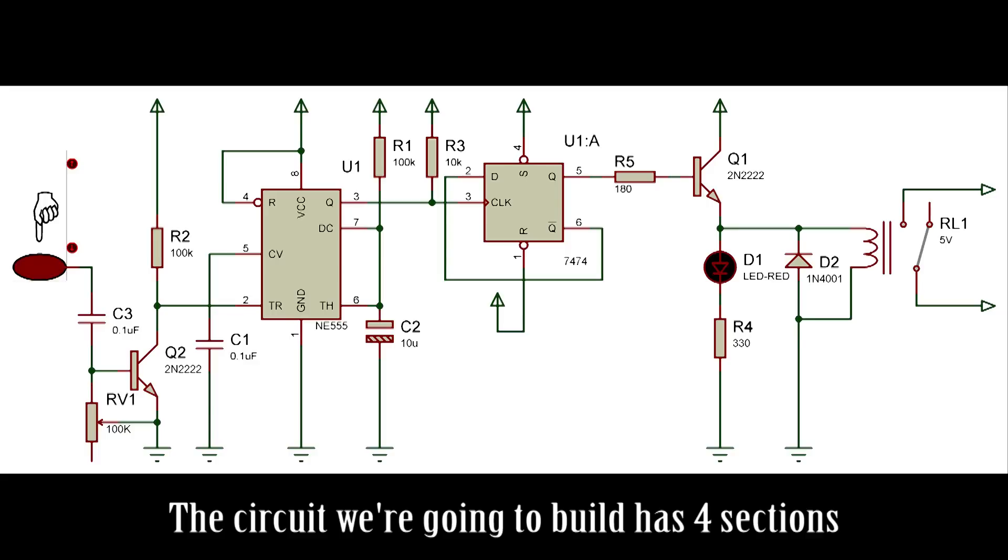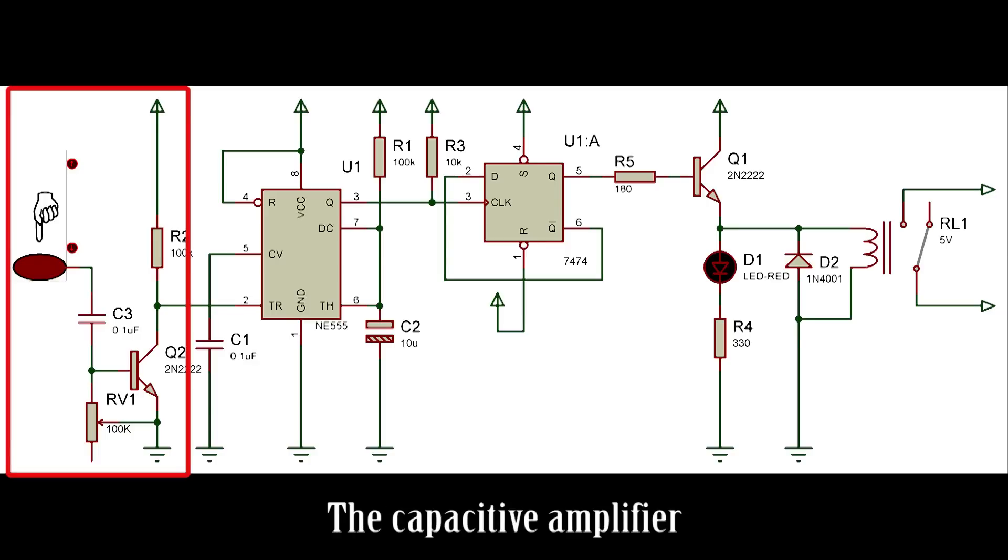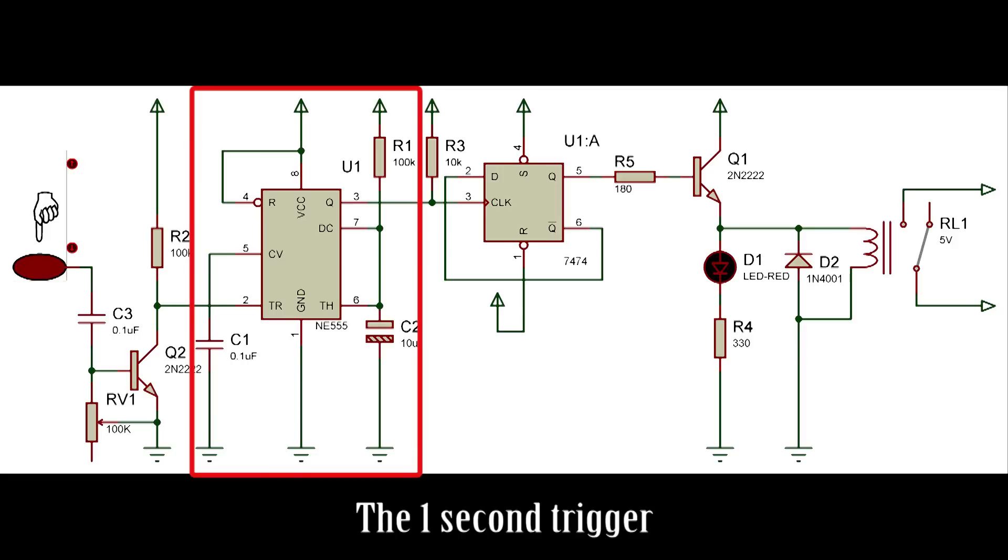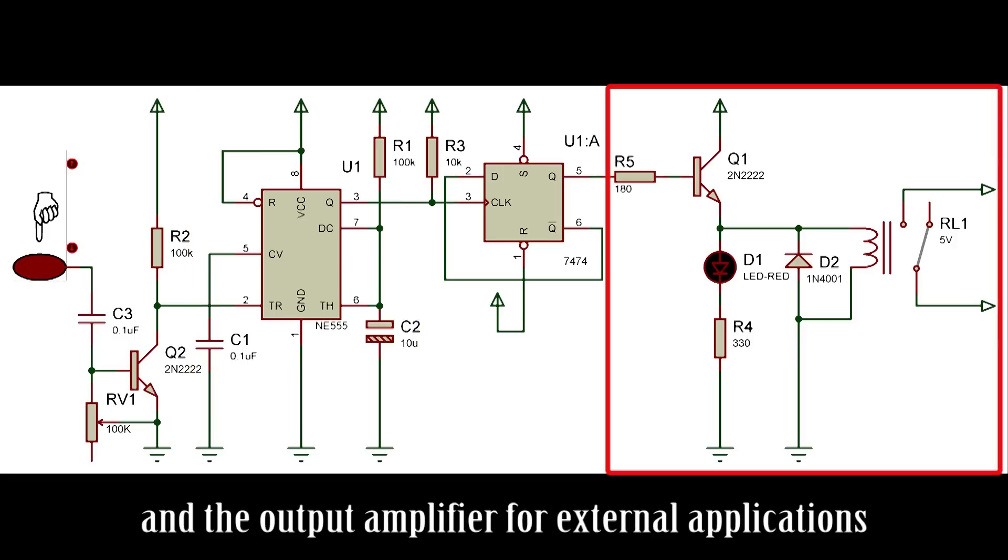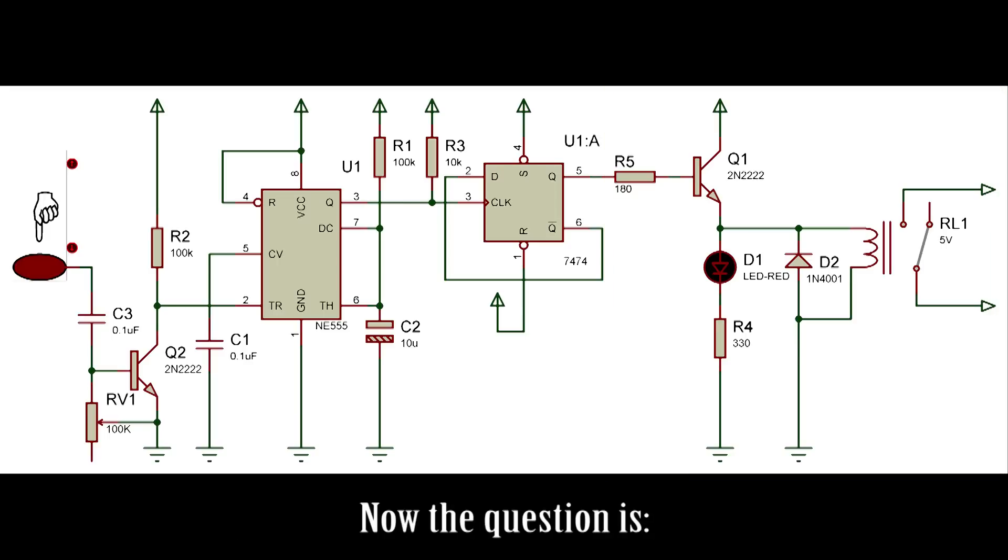touch off touch on capacitive sensor. So let's do this. The circuit we're going to build has four sections: the capacitive amplifier, the one second trigger, the on-off T-latch, and the output amplifier for external applications. Now the question is